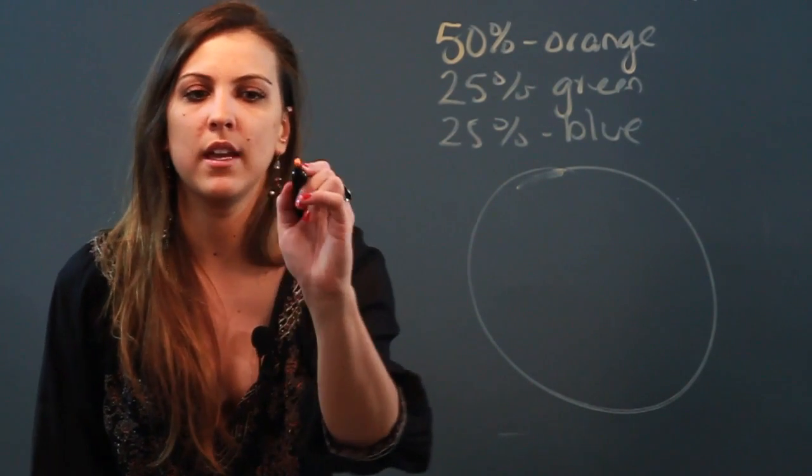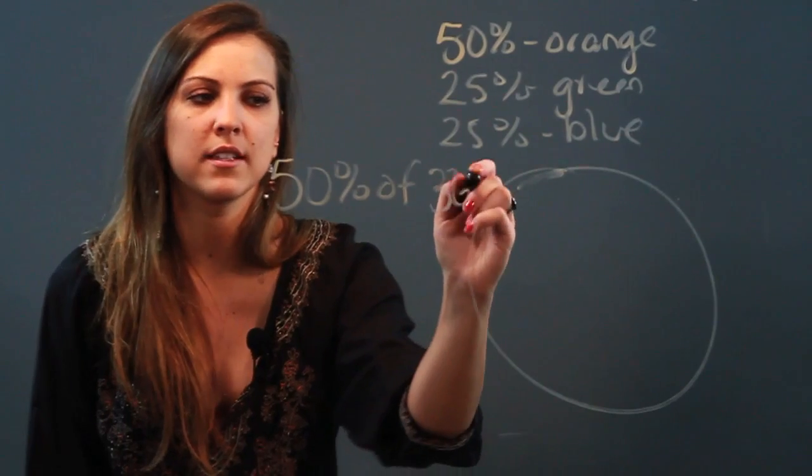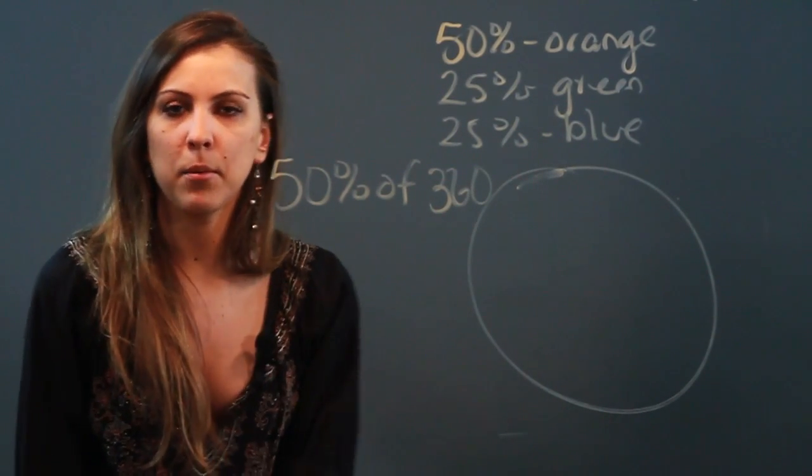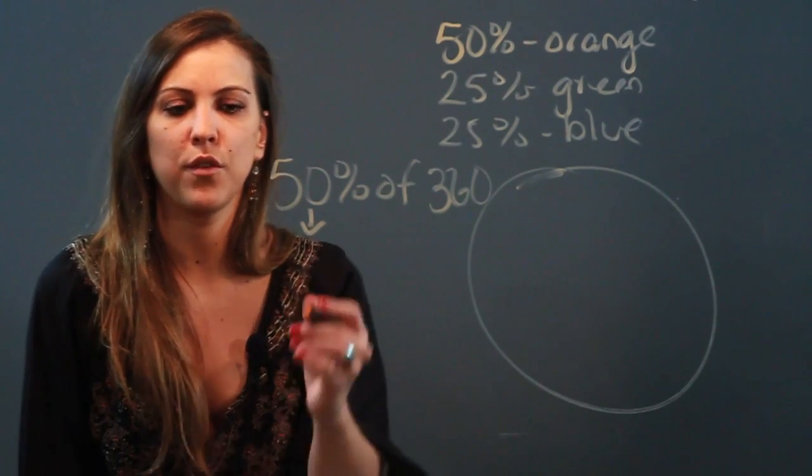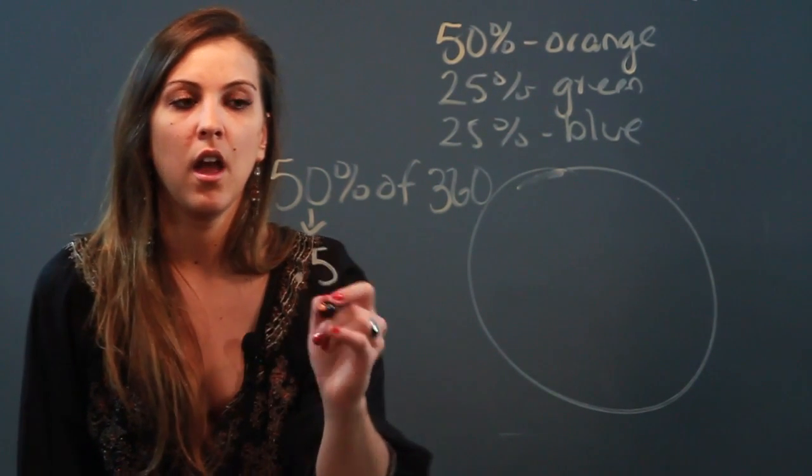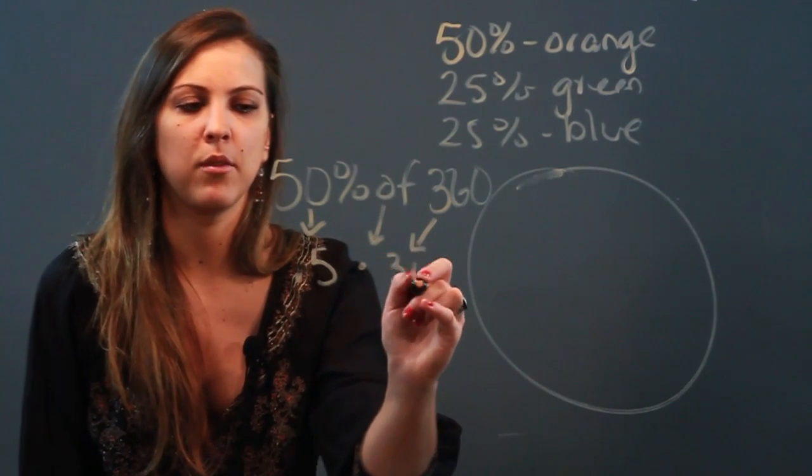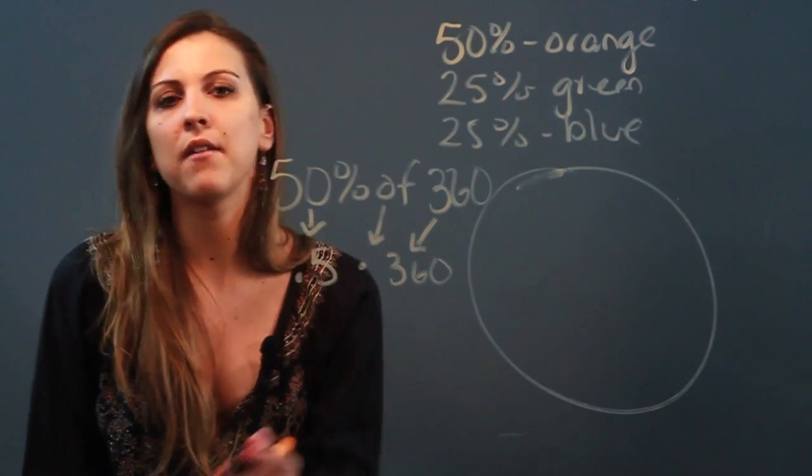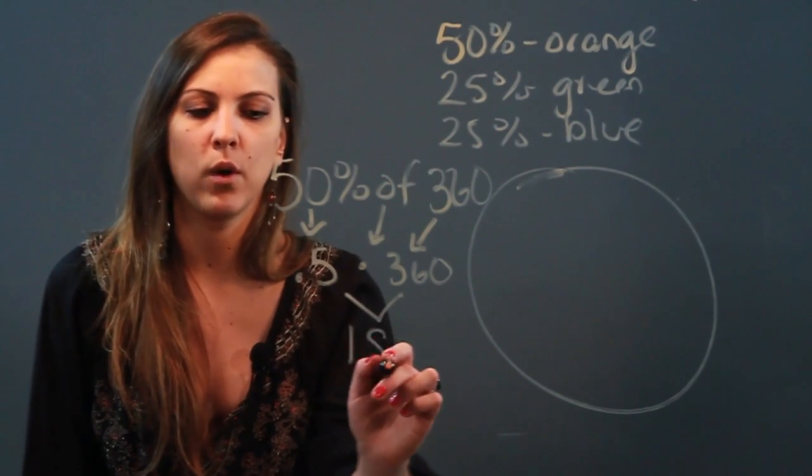So what we want to do is 50% of 360. Now we just have a simple percent problem. Anytime you want to find a percent of a number, we're going to convert it into a decimal first. So 50% is 0.5, of always means to multiply, and 360 is just a number. Now we're doing 0.5 times 360, and if you work that out or do it in your calculator, you're going to get 180.